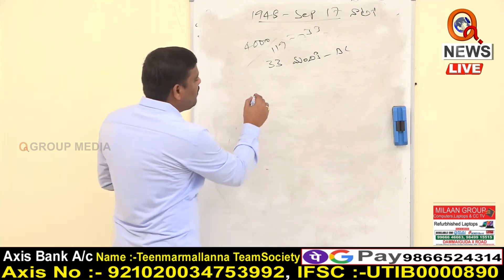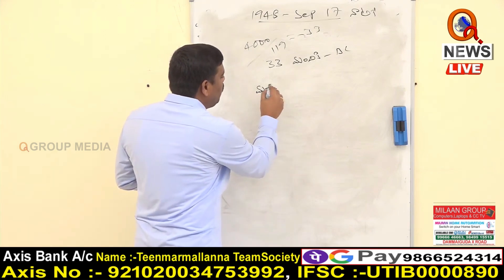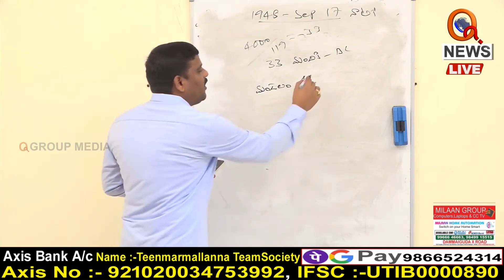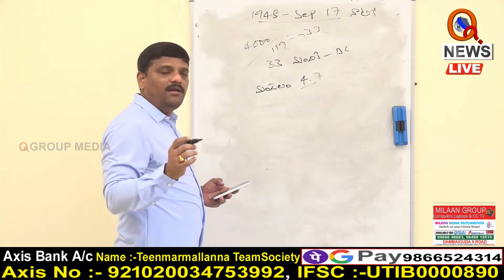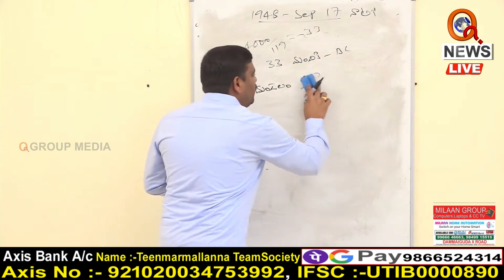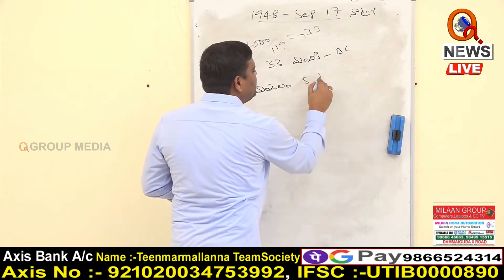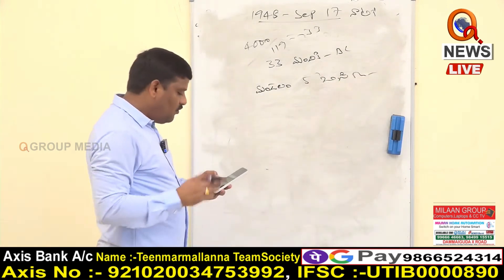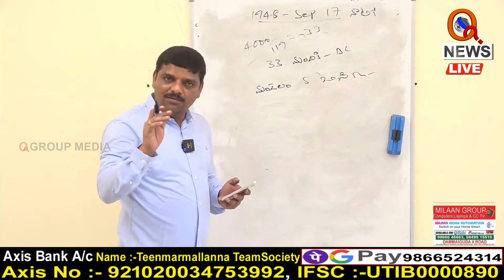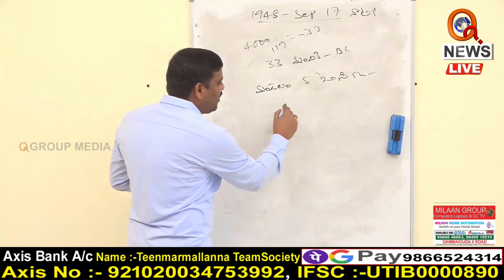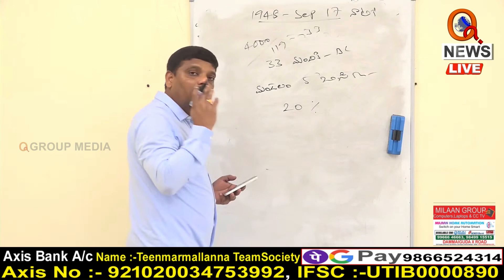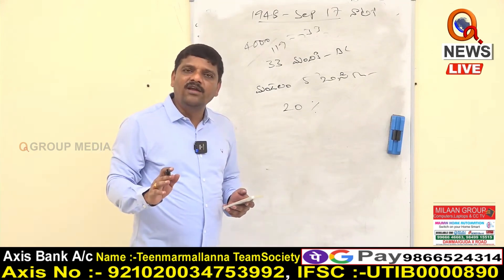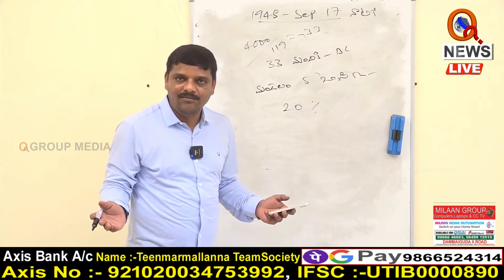That means, in a mandal, there are 4.7 mandals. In a mandal, there are 4.7 mandals. In a mandal, there are 2.7 mandals. In a mandal, there are 5.7 mandals. This is BC.